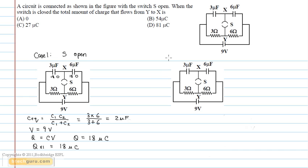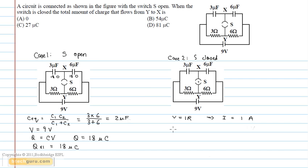Now let us have a look at Case 2 when the switch S is closed. The total resistance in this case is 9 ohms and the total potential difference is 9 volts. Applying V is equal to IR, we get I is equal to 1 ampere. So the potential difference across the 3 ohm resistor is 3 volts, which is the same as the potential difference across the 3 microfarad capacitor.